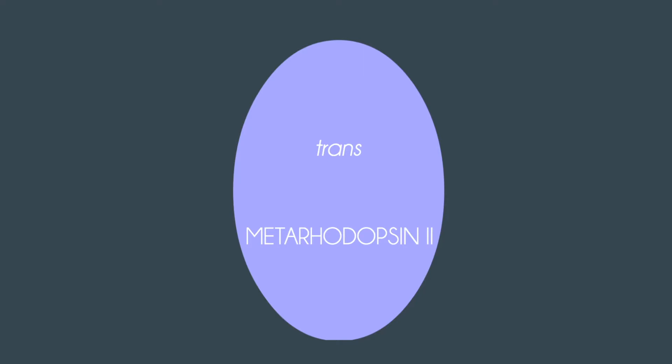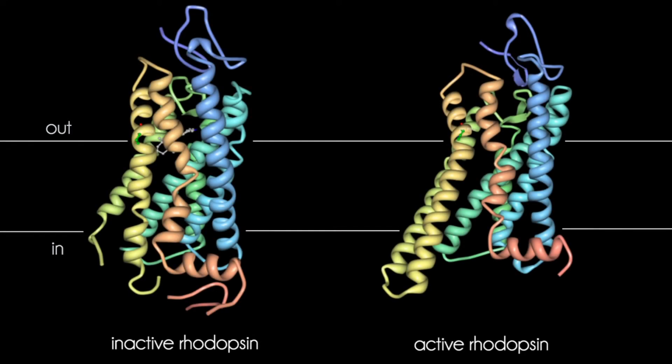At this point, the Schiff-base linkage between 11-trans-retinal and the lysine residue is hydrolyzed, allowing 11-trans-retinal to dissociate from the complex. The G protein active site undergoes various changes as well. Helix-6 tilts away from the transmembrane core on the cytoplasmic side due to a kink at proline-267, and this results in the widening of the binding site.